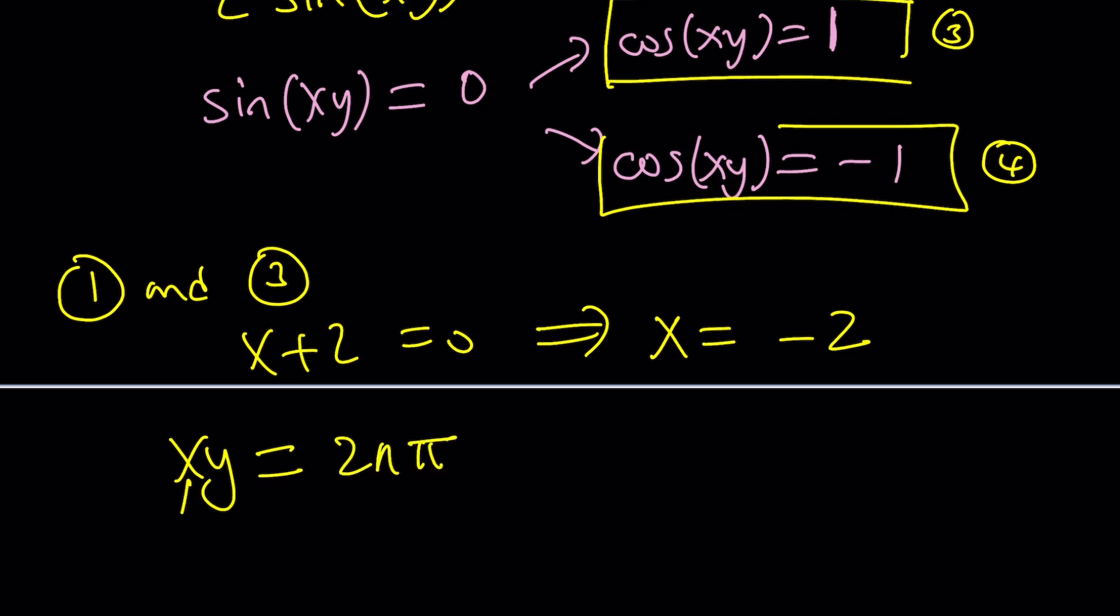So from here, we get y equals negative n pi, which means, because n and negative n are equivalent, they're integers. So n is an integer, by the way.